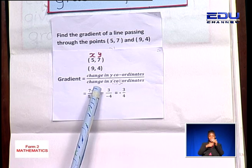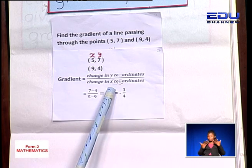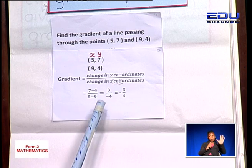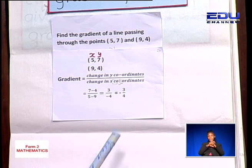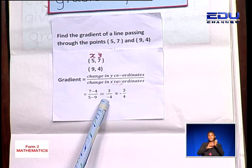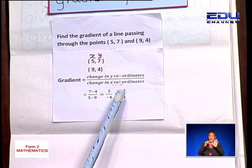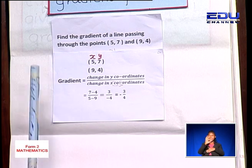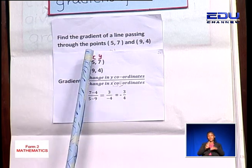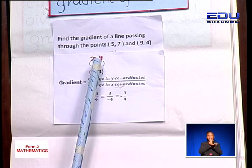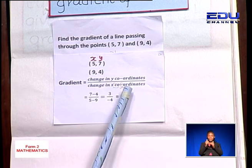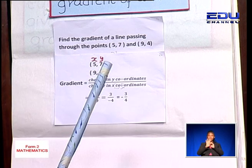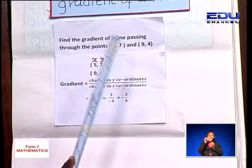7 minus 4 gives us 3, and 5 minus 9 gives us negative 4. 3 over negative 4 can also be written as negative 3 over 4. So the gradient of the line joining these two points is negative 3 over 4. The gradient is also known as the slope.